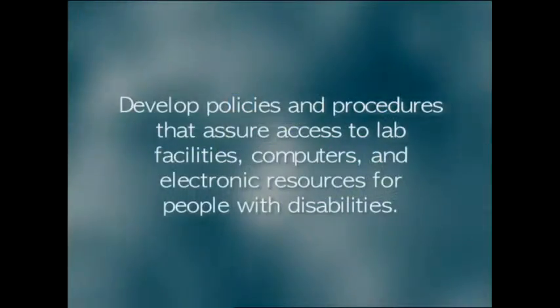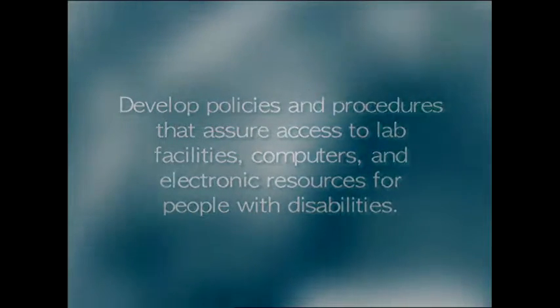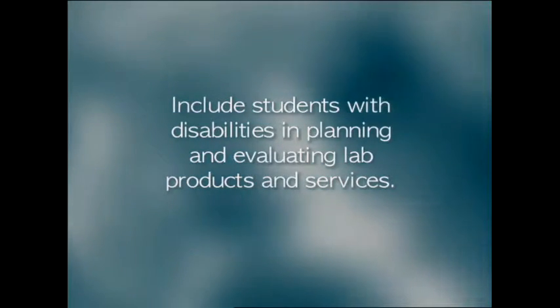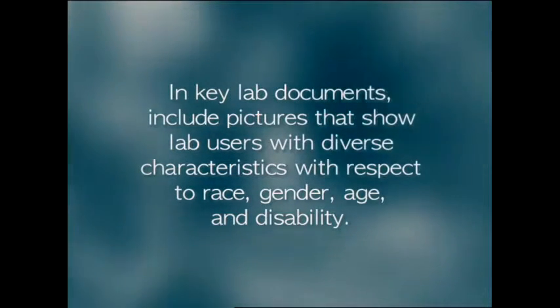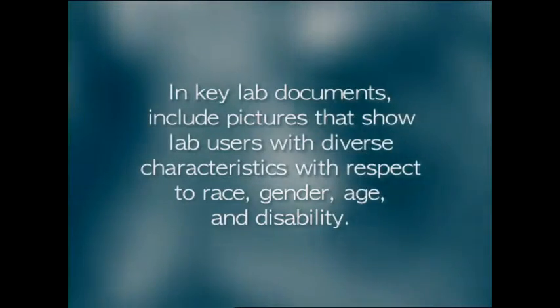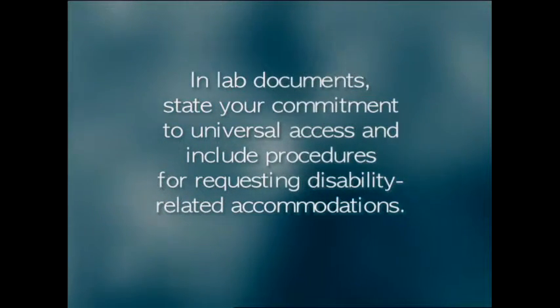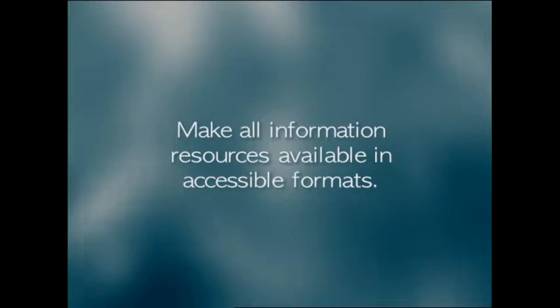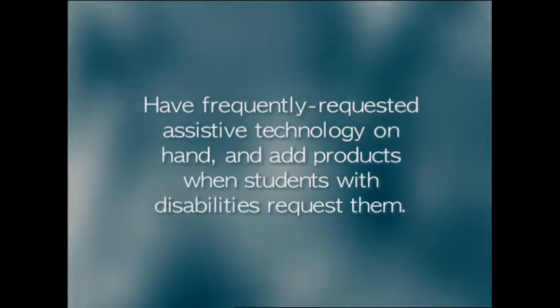With those key issues in mind, you'll be able to make your lab accessible to everyone. To get started: develop policies and procedures that assure access to lab facilities, computers, and electronic resources for people with disabilities; consider accessibility in the procurement process; include students with disabilities in planning and evaluating lab products and services; in key lab documents, include pictures showing lab users with diverse characteristics with respect to race, gender, age, and disability; state your commitment to universal access and include procedures for requesting disability-related accommodations; make signs with high contrast and large print; make all information resources available in accessible formats; and have frequently requested assistive technology on hand, adding products when students with disabilities request them.